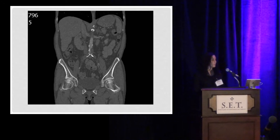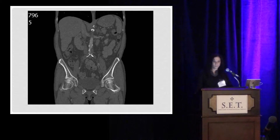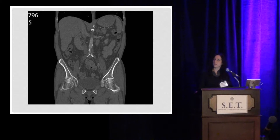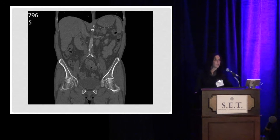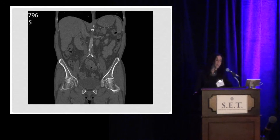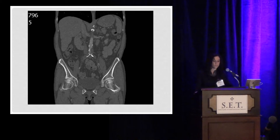I wasn't able to load the entire axial images from her outside CT scan, but you can see she has relatively normal appearing aorta in the infrarenal segment down to the distal aorta, where she becomes severely narrowed and occludes, and then bilateral common iliac arteries are occluded. She did reconstitute at her distal common iliac, and her external iliac was without disease, but she did have significant disease in her common femoral artery, demonstrating two levels of significant stenosis and occlusion.